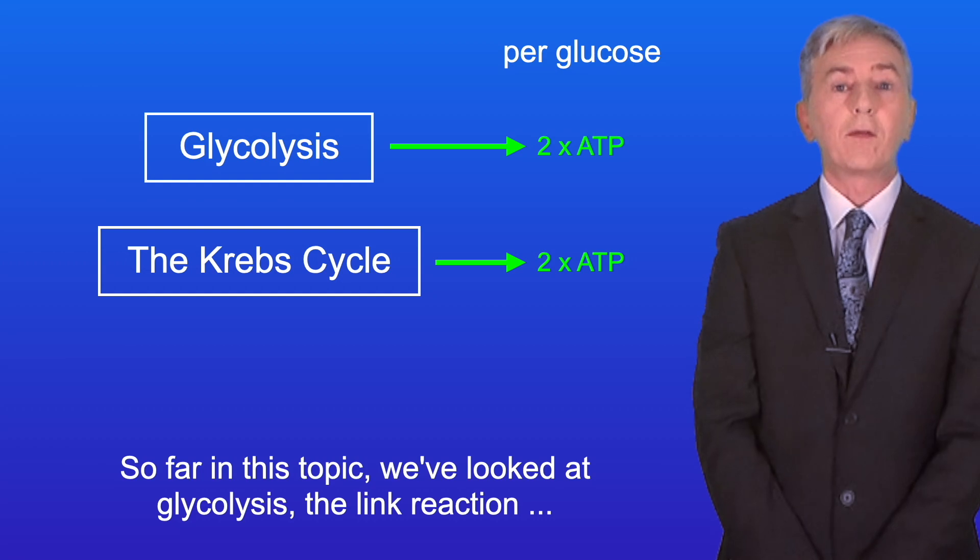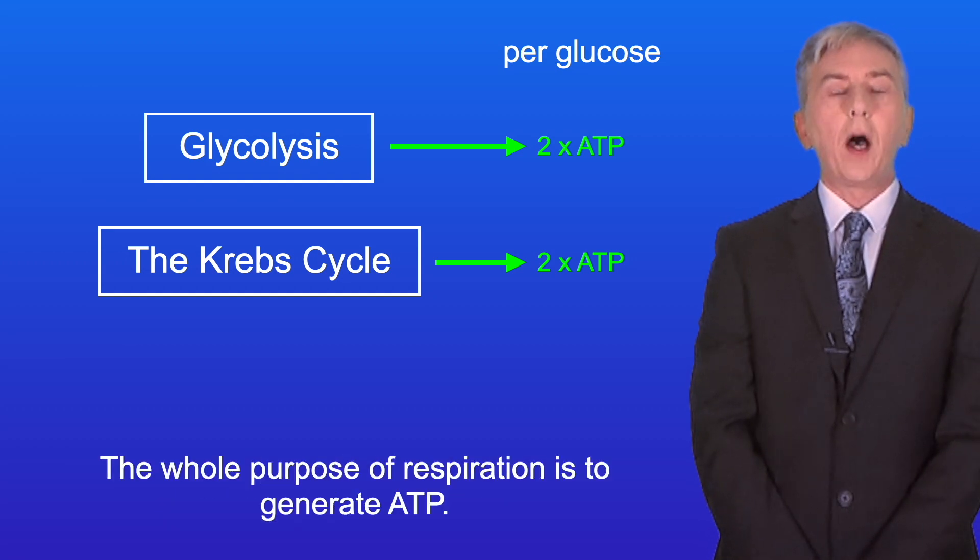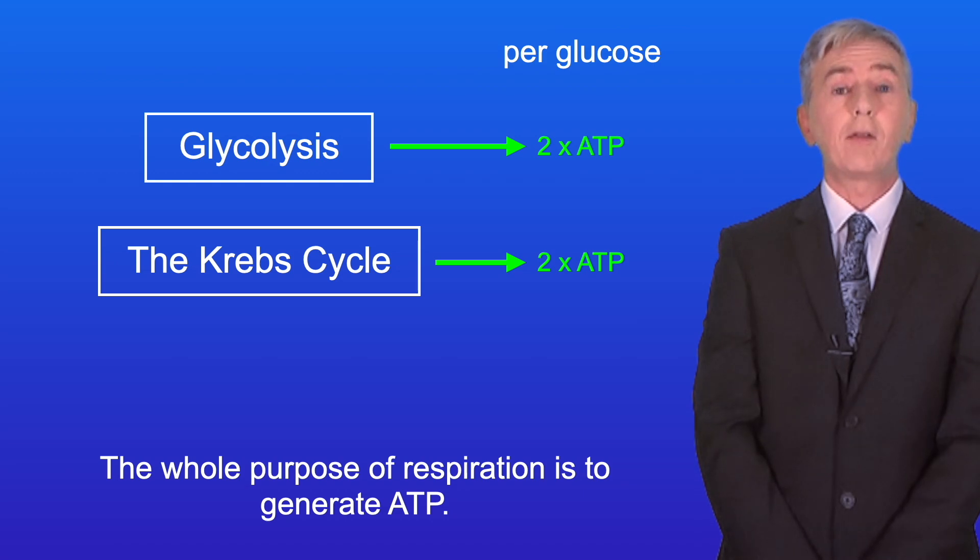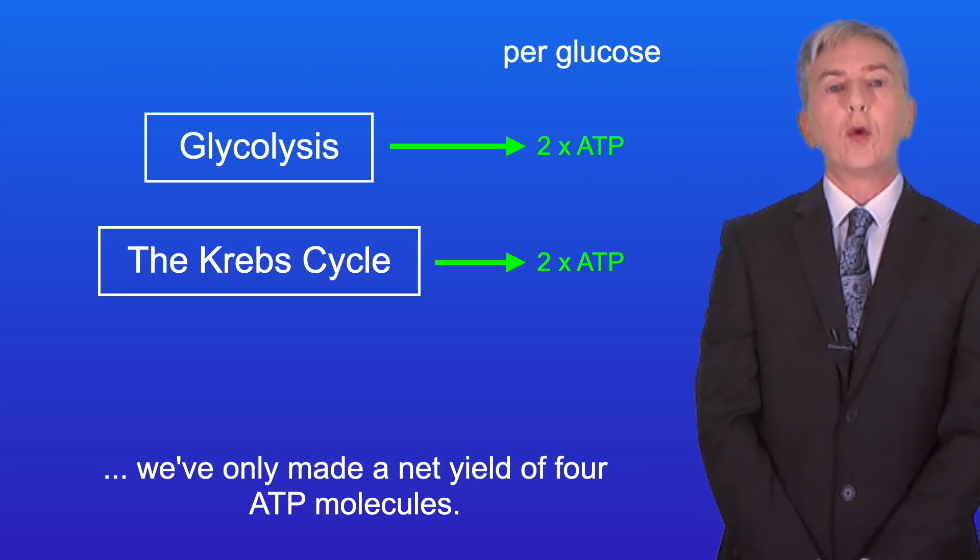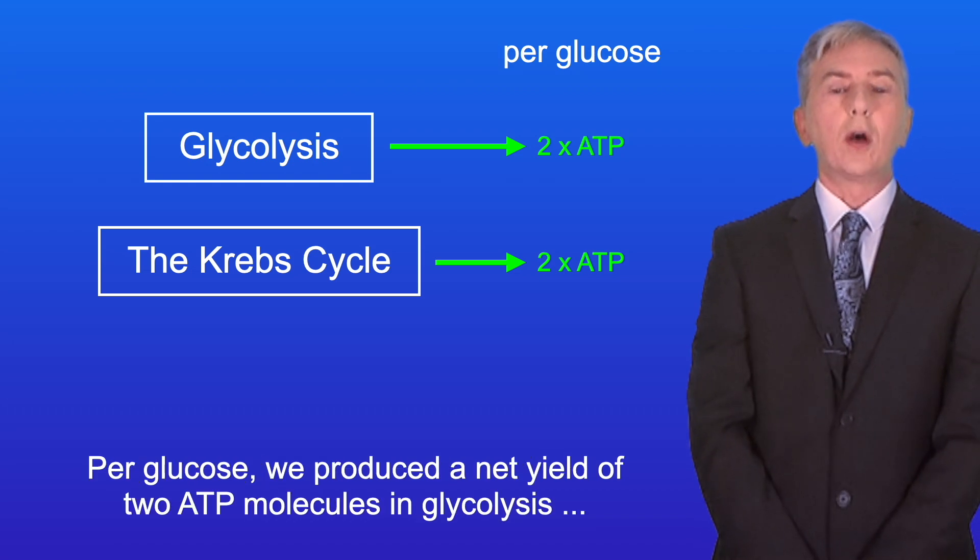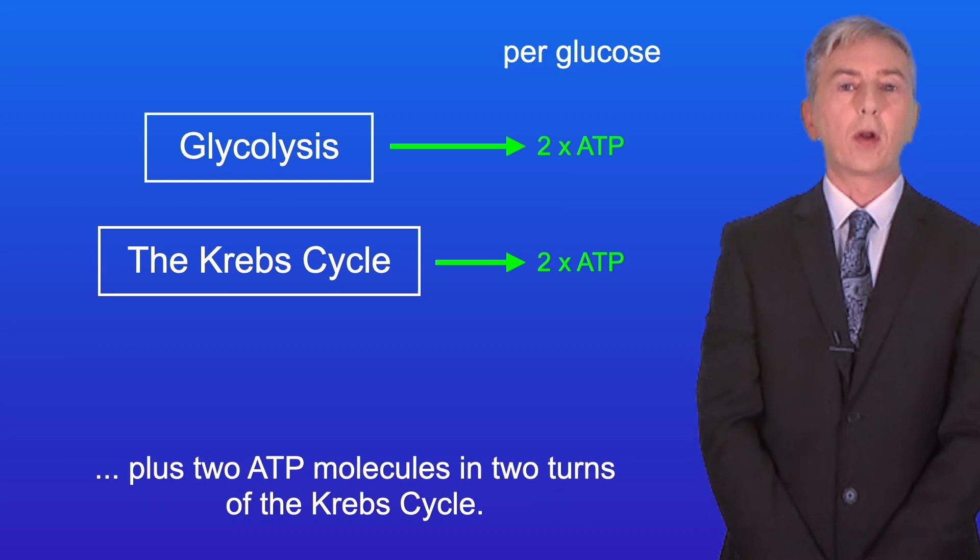So far on this topic we've looked at glycolysis, the link reaction, and the Krebs cycle. Now the whole purpose of respiration is to generate ATP. However, in the reactions we've seen so far, we've only made a net yield of four ATP molecules. Per glucose we produced a net yield of two ATP molecules in glycolysis, plus two ATP molecules in two turns of the Krebs cycle.